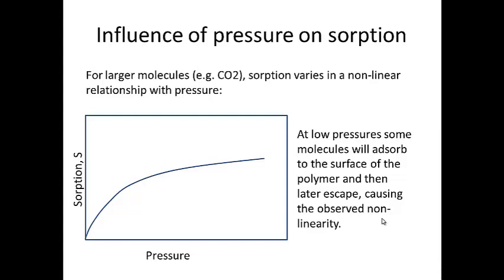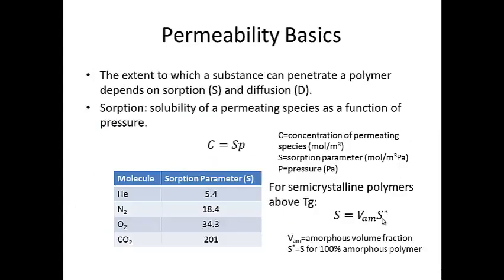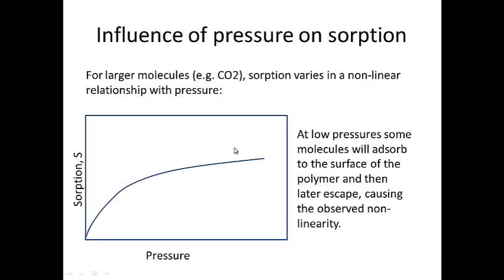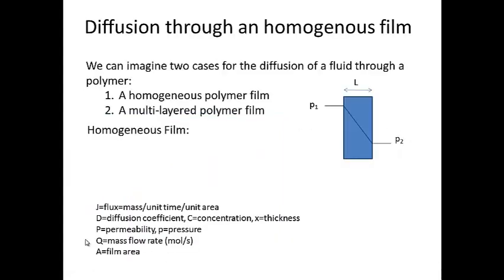Pressure also affects the sorption. In the previous equation, we treated sorption as constant with pressure, but it turns out sorption is not constant with pressure. At low pressures, there is a probability that molecules can escape from the surface of the polymer, or desorb. This means there is a non-linearity in sorption at very low pressures, to the point where at zero pressure you would have zero sorption. We will look at two different cases of polymer permeability in the next part of topic six.